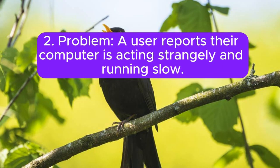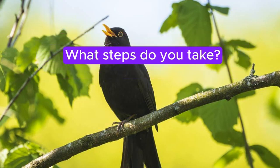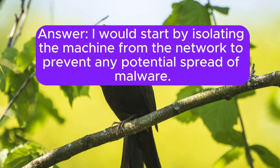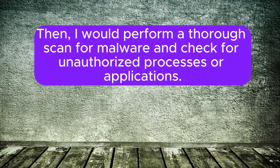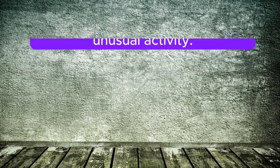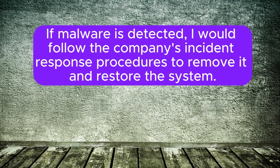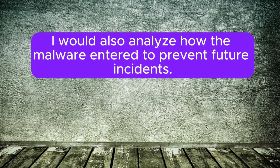Problem 2: A user reports their computer is acting strangely and running slow. What steps do you take? I would start by isolating the machine from the network to prevent any potential spread of malware. Then I would perform a thorough scan for malware and check for unauthorized processes or applications. I would also review system logs for unusual activity. If malware is detected, I would follow the company's incident response procedures to remove it and restore the system. I would also analyze how the malware entered to prevent future incidents.